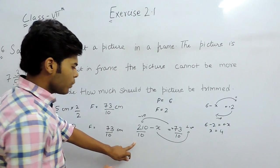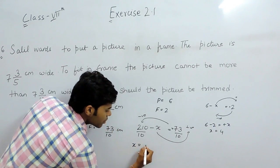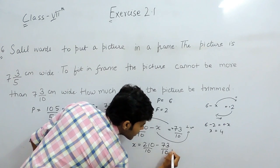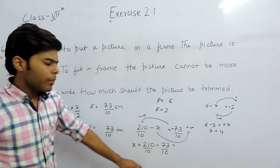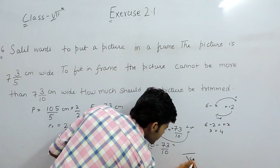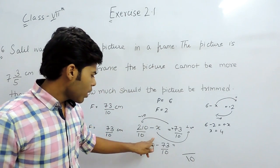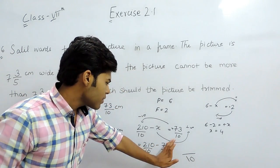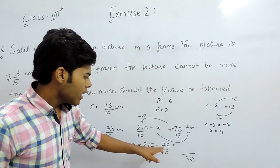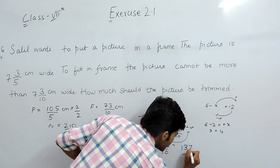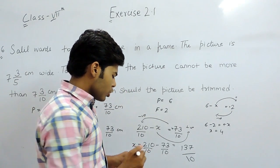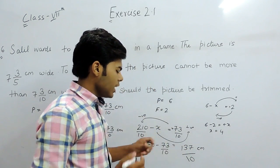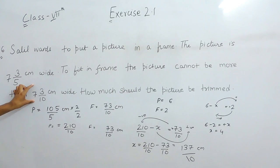So now it will be x equals to 210 upon 10 minus 73 upon 10. So in the denominator, 10 will remain as it is. And now we will subtract 73 upon 10. Supposingly if this were 70, then it would have been 140 and it will be 137. So it should be trimmed by 137 upon 10 cm which means 13.7 cm so that it fits in this frame.